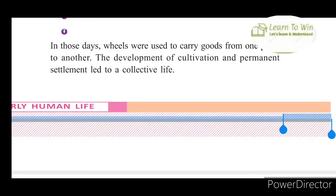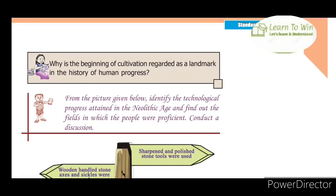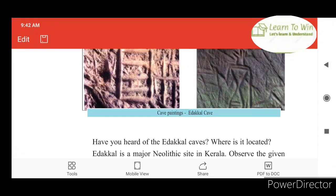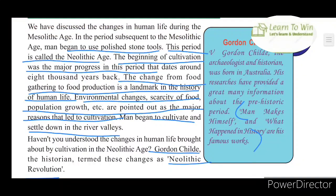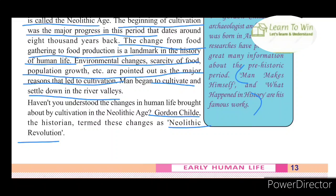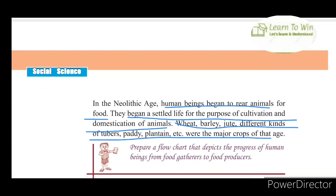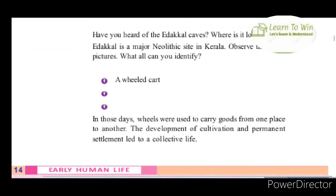There is a group of people living in a group. He was a food gatherer and he became a food producer. He was able to cultivate and live in a settled community. They began to rear animals and began a settled life for cultivation.